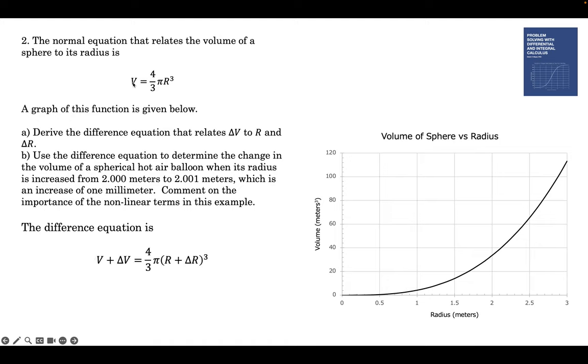We have the normal equation: V is 4 thirds pi r cubed. We change the radius by delta r, and the V increases by delta V. That's what this expression says. We're going to cube this out, starting with that. We multiply every term by every other term. We get this expression.